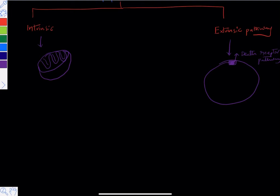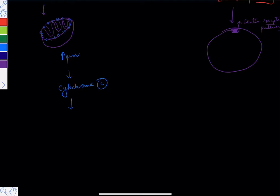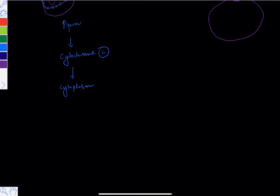Inside the cell, during the process of apoptosis, there is increasing permeability of the mitochondria. Whenever there is increasing permeability of the mitochondria, cytochrome c - which is present in the mitochondria - is released into the cytoplasm. This cytoplasmic cytochrome c is going to react with a few genes, specifically APAF1.